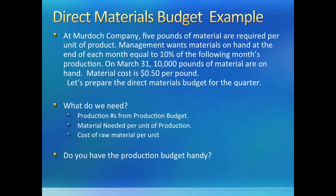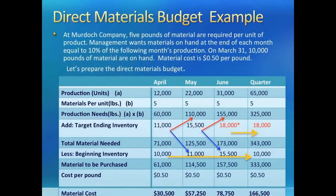We will begin making the budget with columns for each month and one for the quarter. We copy down the production needs from the production budget in the first row. In the next step, we multiply production units by the amount of material needed to make each unit. The third row gives us pounds of raw material needed each month for the production needs.